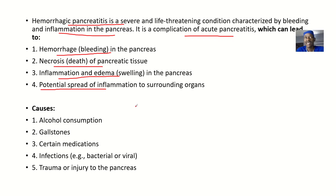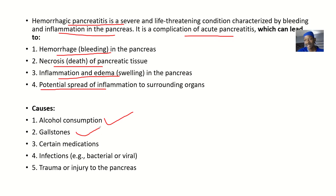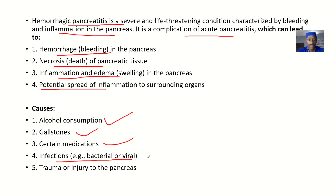What could be the causes of this hemorrhagic pancreatitis? You have things like alcohol consumption — some people are chronic alcoholics, while some people are just new to it but don't have luck. It could be as a result of gallstones. It could be that the person is undergoing certain medications that are causing the pancreas to become inflamed. It could be infections from bacteria and viruses. It could also be trauma or injury to the pancreas.